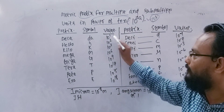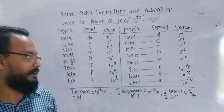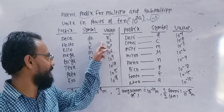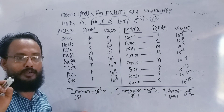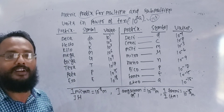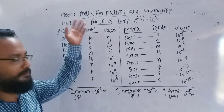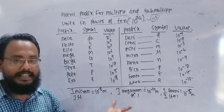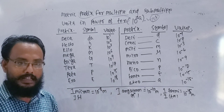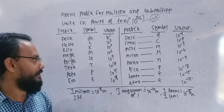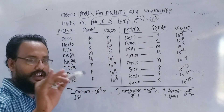Ten to the power of 1 is deca. So 5 into 10 to the power of 1 — 5 decameter or decagram. Minutes means mass and length. Ten to the power of 1 is deca.